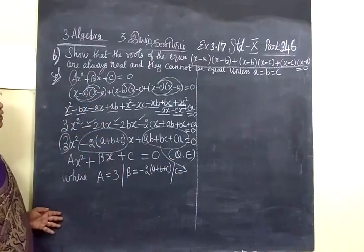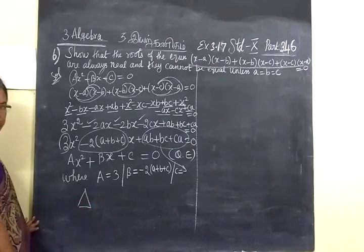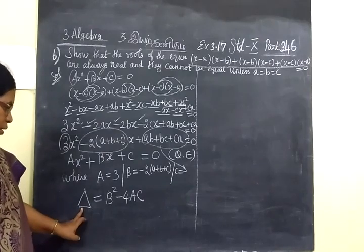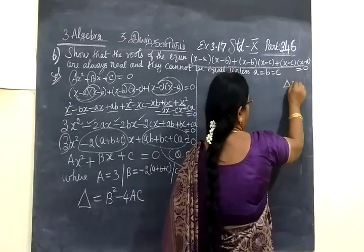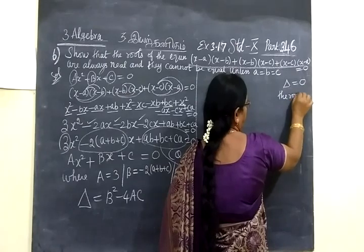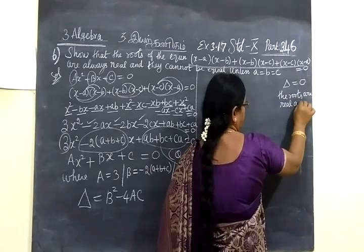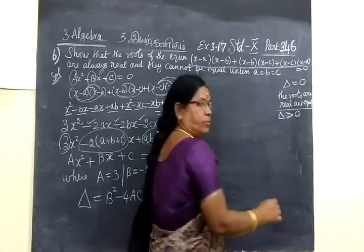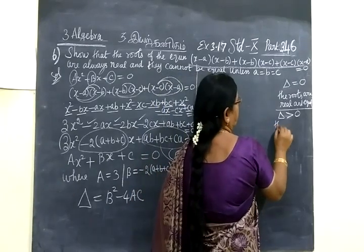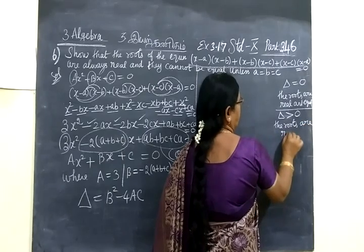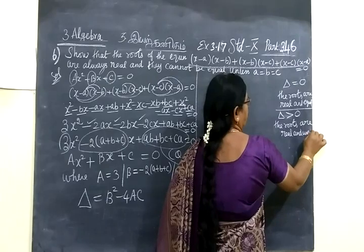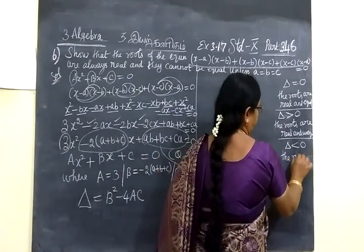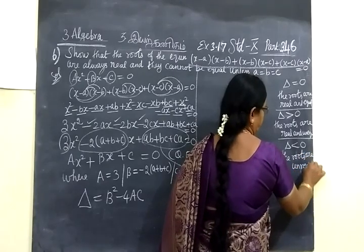Now we want to find the nature of the roots. For that we compute the discriminant: delta equals b² minus 4ac. If delta equals 0, then the roots are real and equal. If delta is greater than 0, the roots are real and unequal. If delta is less than 0, the roots are imaginary or unreal.